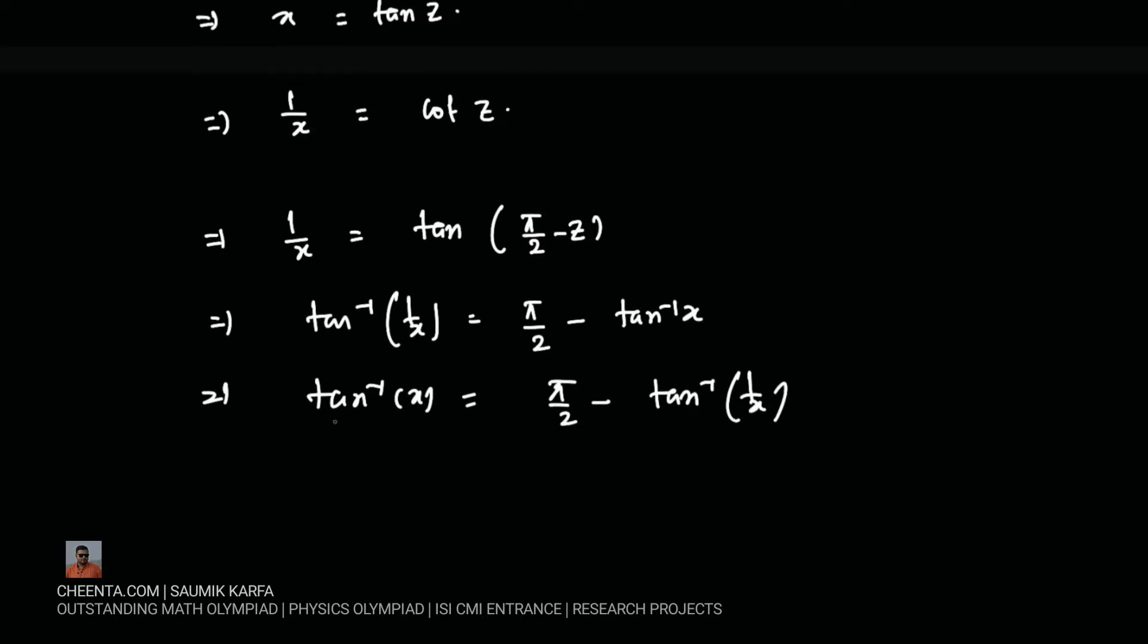So our function tan inverse x over x is nothing but pi by 2 over x minus tan inverse 1 by x over x. So now let us start by this manipulation.